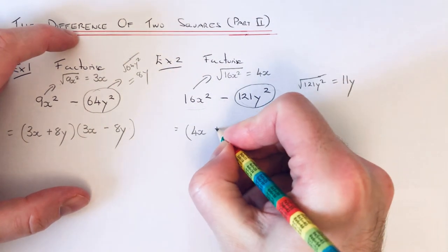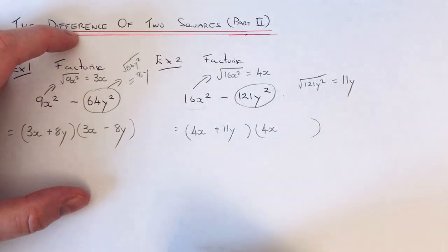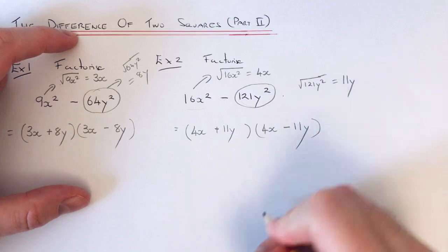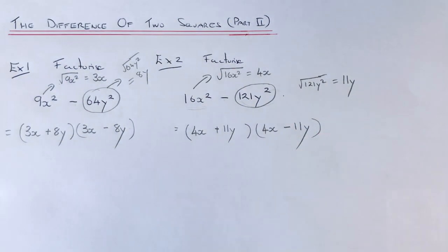So we put plus 11y in the first bracket, and then we need to change the sign in the second bracket. So again, you can check that this works by expanding and simplifying. So I hope you like this video. If you did, make sure you like and subscribe to my channel. Thanks for watching guys, bye bye.